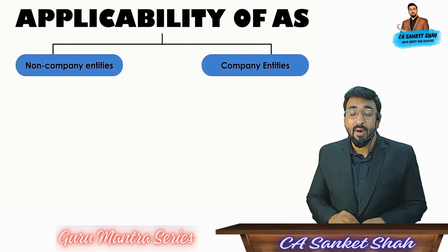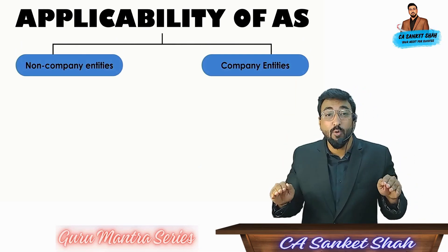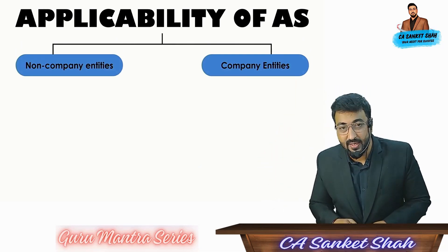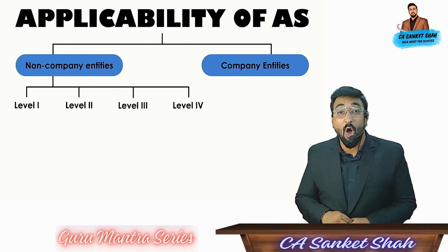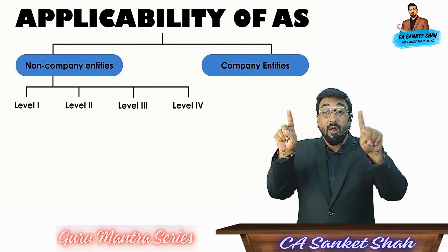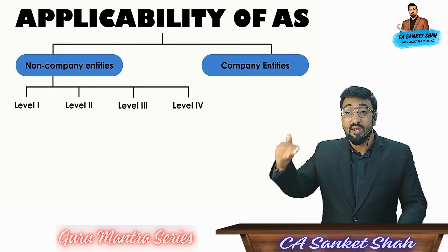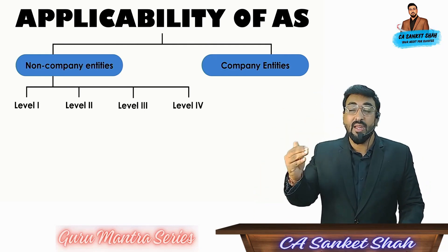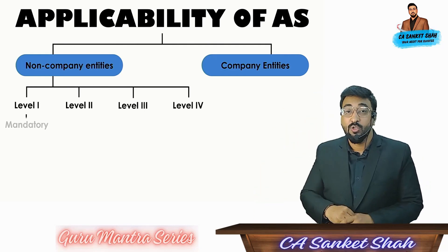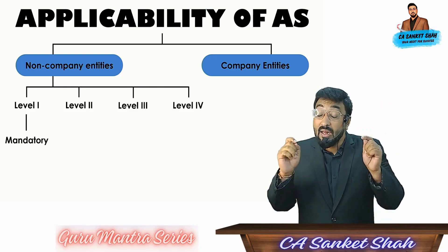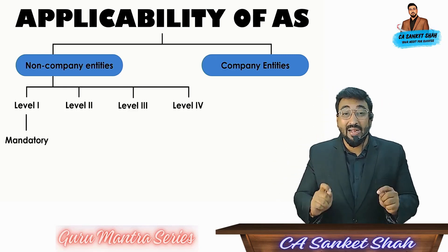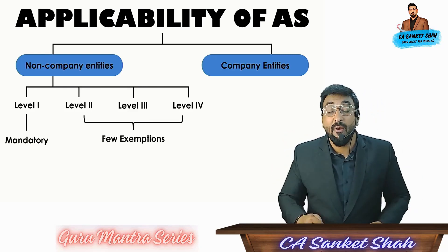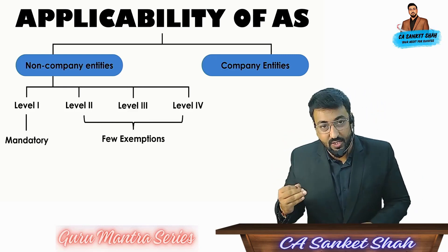Remember, it is divided in two parts: one is non-company entities and second one is company entities. Now understand non-company entities — divided in four levels: level 1, level 2, level 3, and level 4. Level 1 is mandatory and levels 2, 3, and 4 have some exemptions.